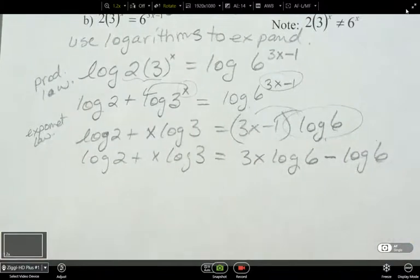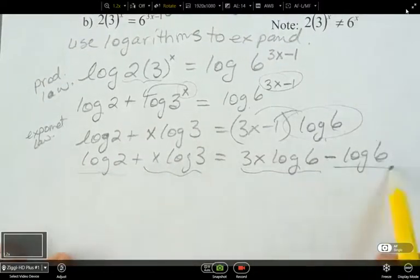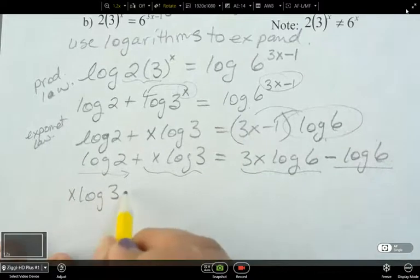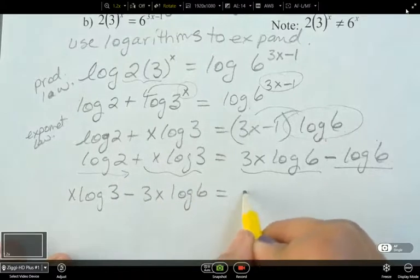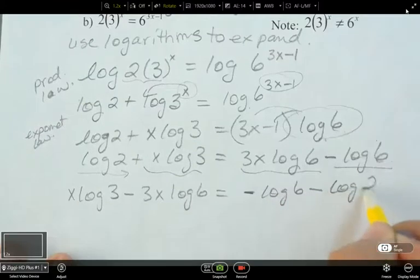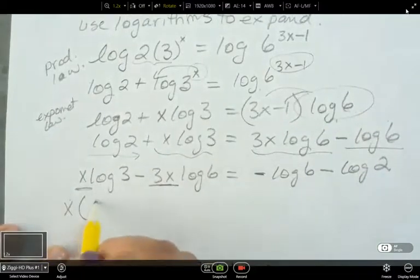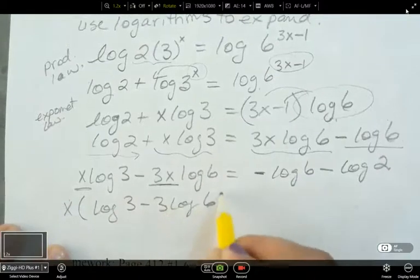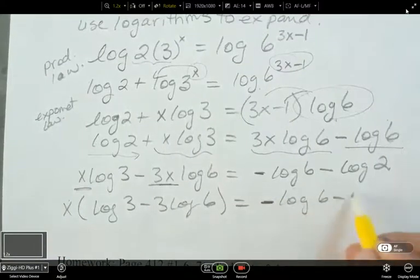Now what's going to happen next? Collect like terms. So which ones am I going to put together on one side? The ones with x's. And these are going to go on the other side. So x log 3 minus 3x log 6 equals minus log 6 minus log 2. What happens now? Factor out the x. X and then I've got log 3 minus 3 log 6 equals negative log 6 minus log 2.